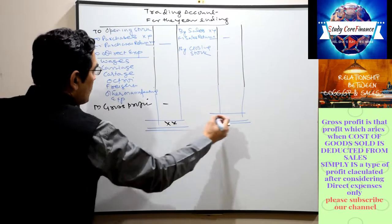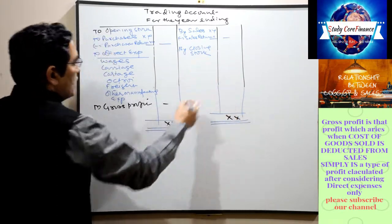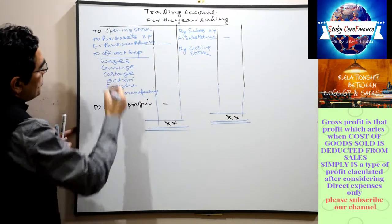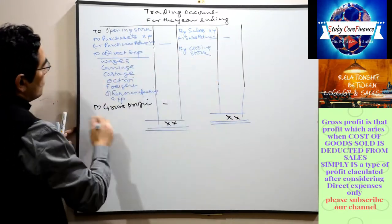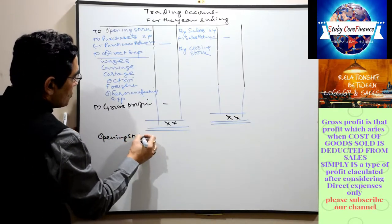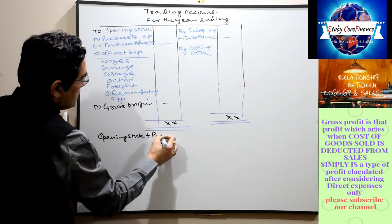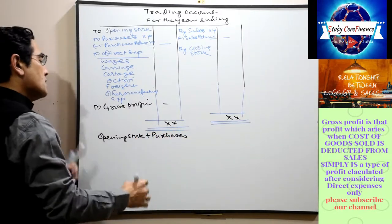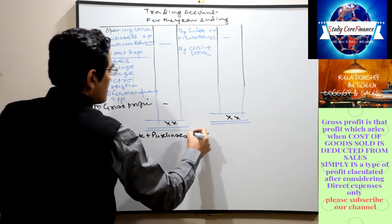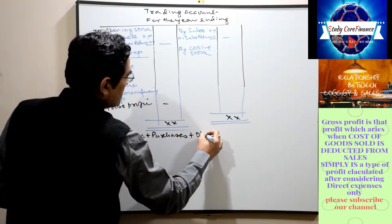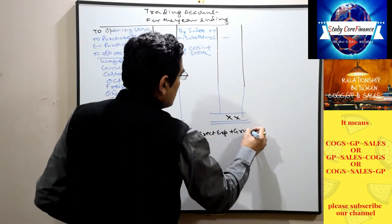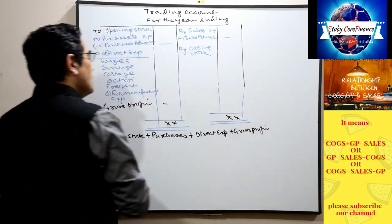We know that the totals of both sides will be equal. On the debit side, we have opening stock, plus purchases, plus direct expenses — and without gross profit, both sides will not be equal. On the credit side, we have sales and closing stock.